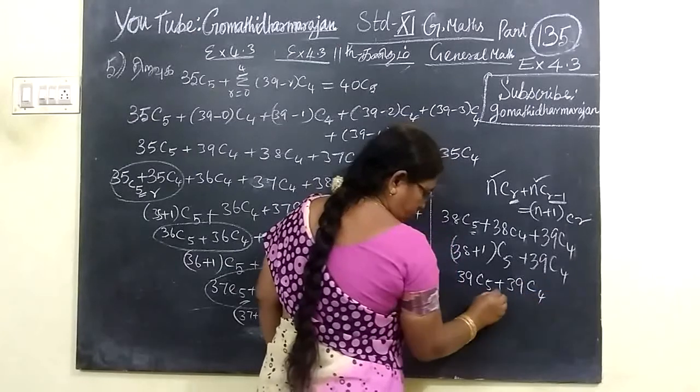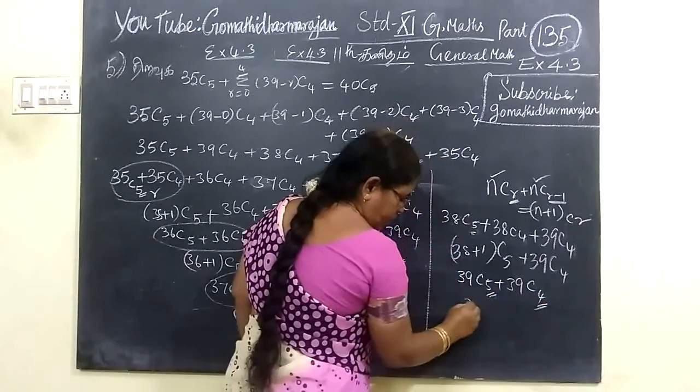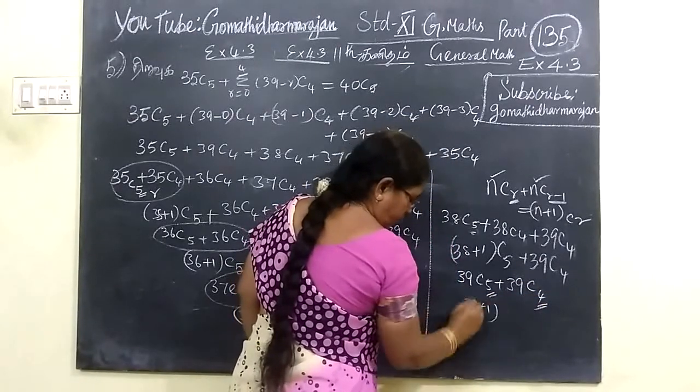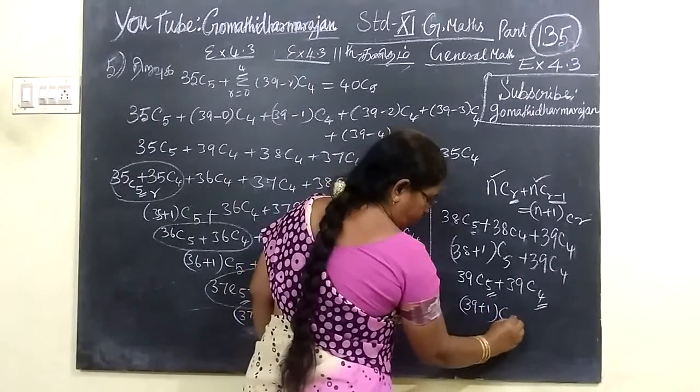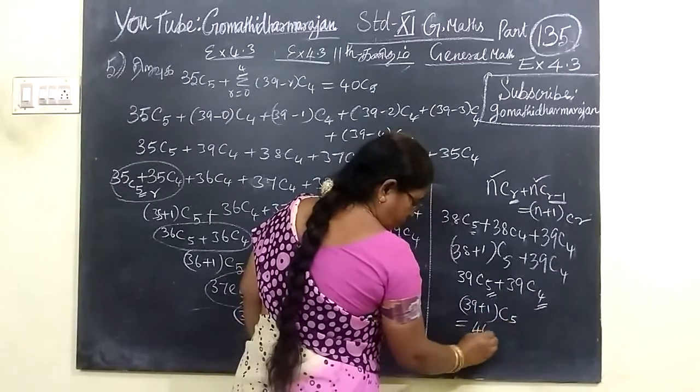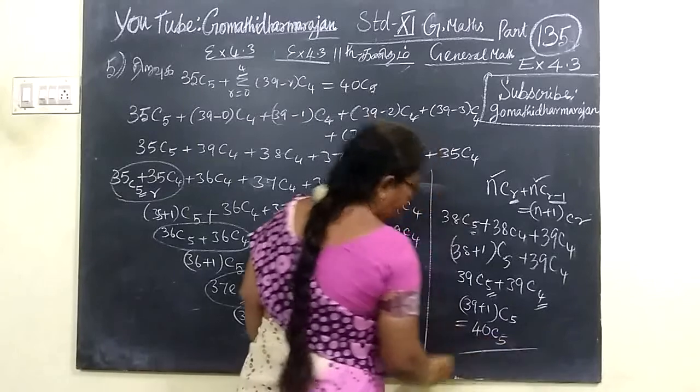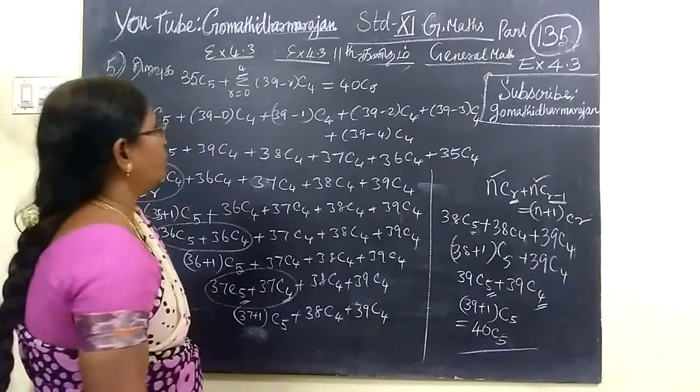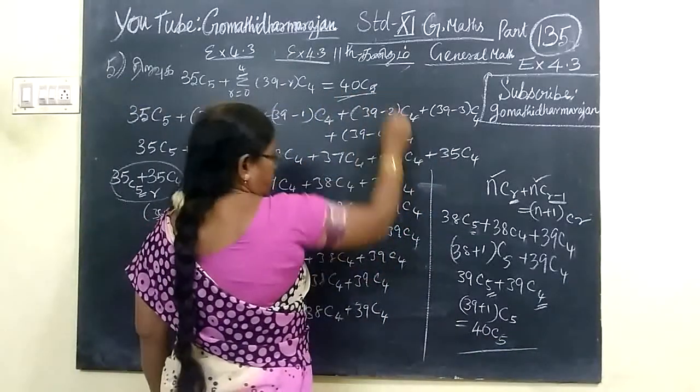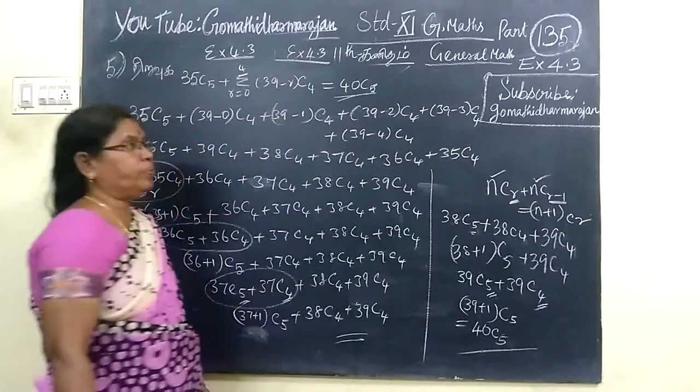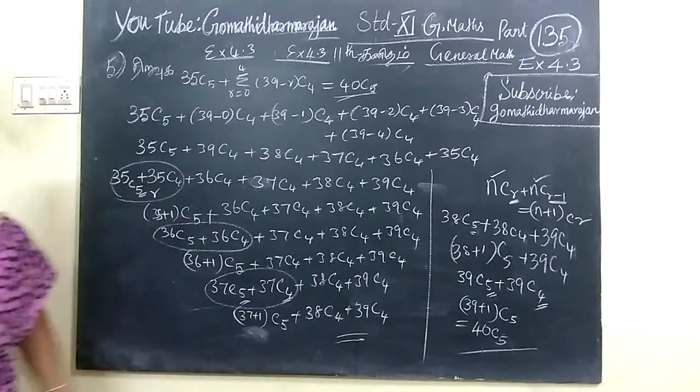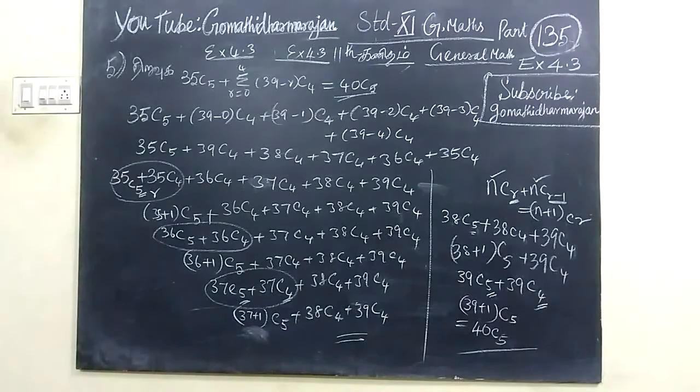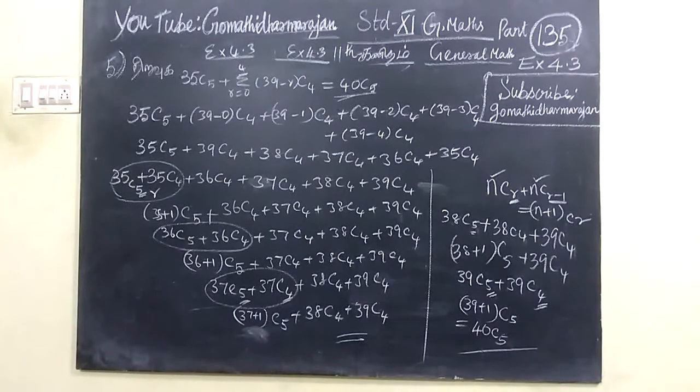Then 39C4, this is 5 and this is 4. So, 39 plus 1, this is the answer. So, this is the answer, 40C5. So this is 40C5. So this is the answer. So this is very interesting term. We will make it in the next video. Thank you.